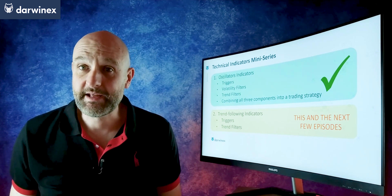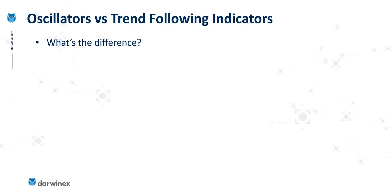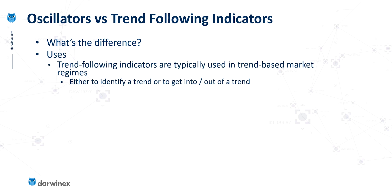Let's focus a couple of minutes on what the differences are between oscillators and trend following indicators. The clue is in the name: trend following indicators are typically used in trend-based market regimes, or at least that's where they tend to be most effective. They can be used to both identify a trend and its direction, but also give us information to help determine when to get into and out of a trend.